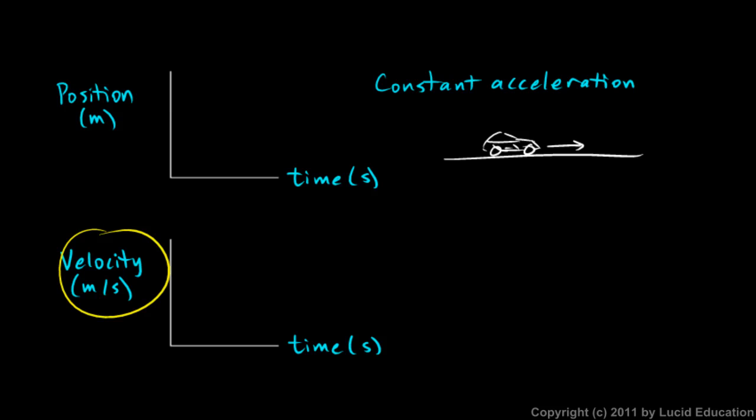We're going to look at the velocity graph first, because it's a little easier to think about in this case. If this car is speeding up, that means that as time goes on, its velocity is getting bigger. So the graph looks something like this. The velocity changes over time, and specifically if it's accelerating, picking up speed in the positive direction, then the velocity is increasing over time.